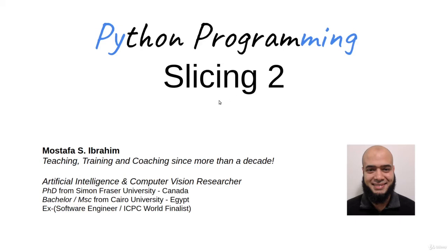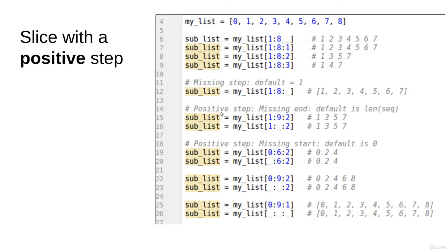Let's continue our talk about slicing. Let's go back to slicing with a positive step. We started with a few statements last time, so let's continue from that point. Here we are focusing on the positive step because the negative step is a bit different. When the end is missing, it will be the length of the sequence, so [1::2] is the same as [1:len:2].